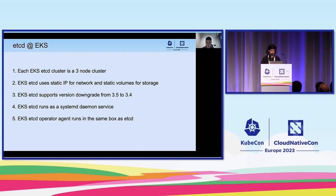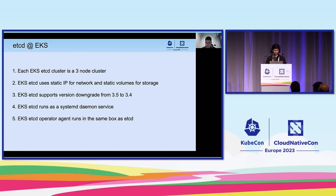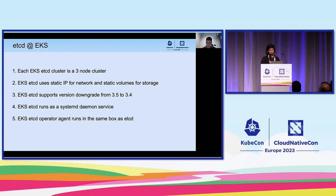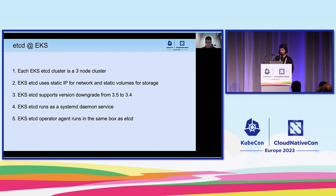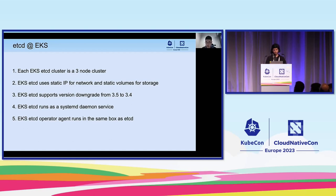EKS etcd runs as a systemd daemon service, unlike running etcd in a container. We run etcd as a systemd service because it's a simpler approach with less overhead, like network isolation and container orchestration. The EKS etcd operator agent runs in the same box as etcd to manage provisioning, health checking, taking periodic backups and storing to persistent storage, automatic defrag, and monitoring. The no-space alarm self-service will be touched upon later by Geeta.